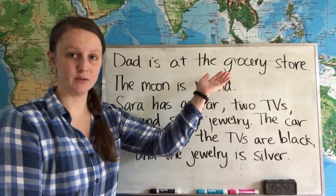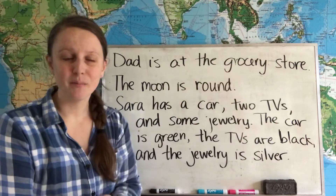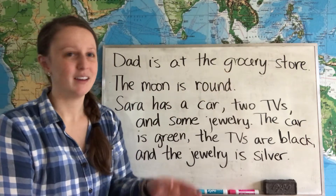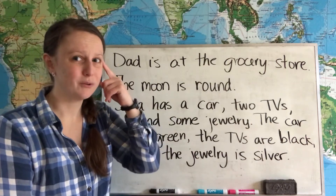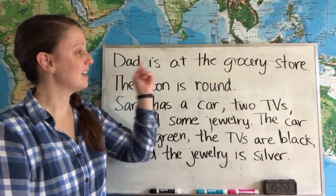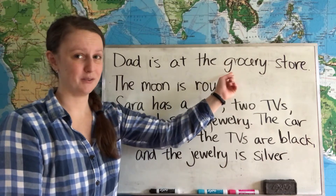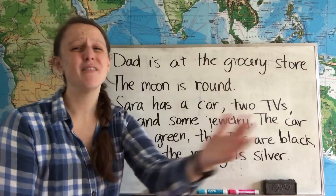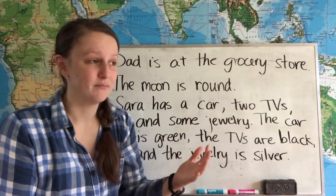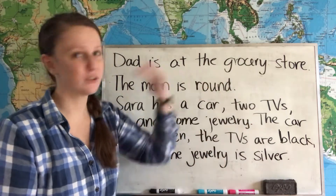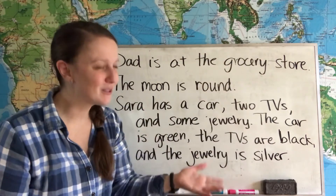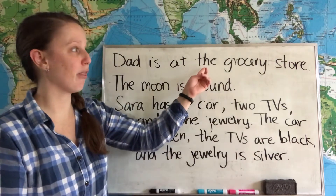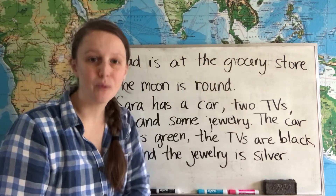Dad is at the grocery store. We go to the same grocery store every week, so I know which grocery store he's at. He is at the grocery store. We often use 'the' when everybody knows which one. We all know which grocery store he's at, so we can use the article 'the' with the noun 'grocery store.'